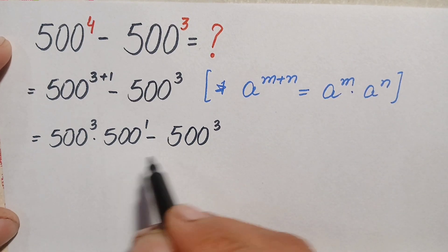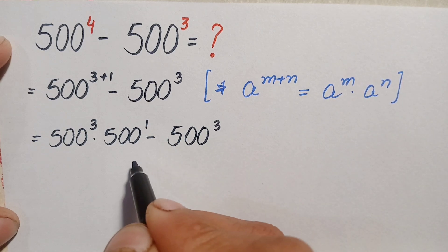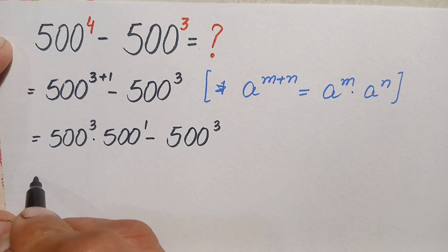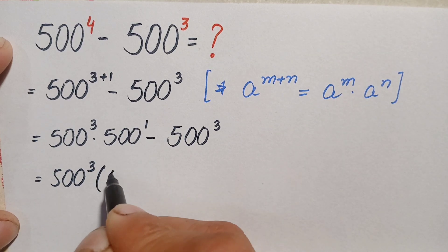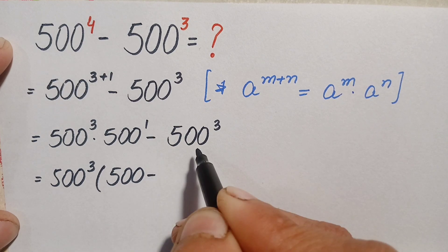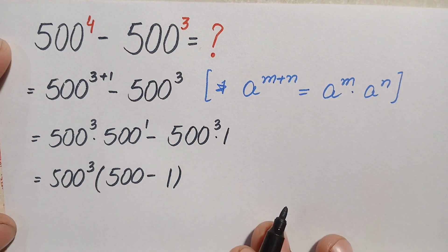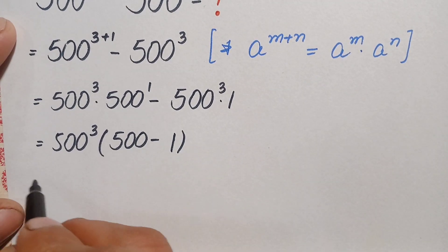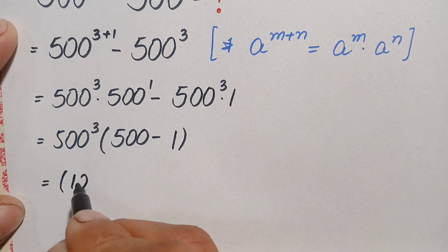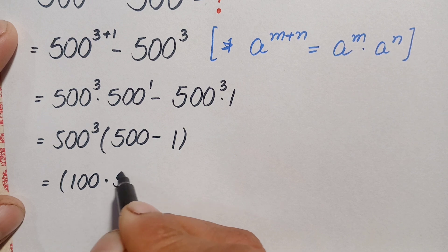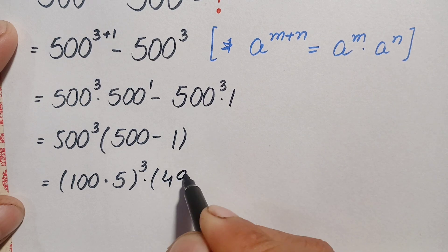Looking at both terms, 500 raised to power 3 (500 cubed) is common, so we take it out as a common factor. This becomes 500 cubed times (500 minus 1), which gives 500 cubed times 499. We can write 500 as 100 times 5, so this is (100 times 5) whole cubed times 499.